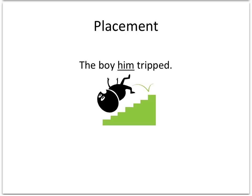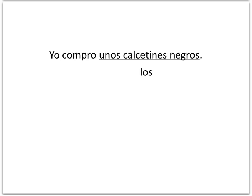Of course, that doesn't make sense in English, but it does in Spanish. As you learn Spanish, you can't just pick and choose how you want to say things. This is exactly how people will understand what you're doing. So we take the him that would have been after tripped in English, and we move it in front of the conjugated verb, tripped.